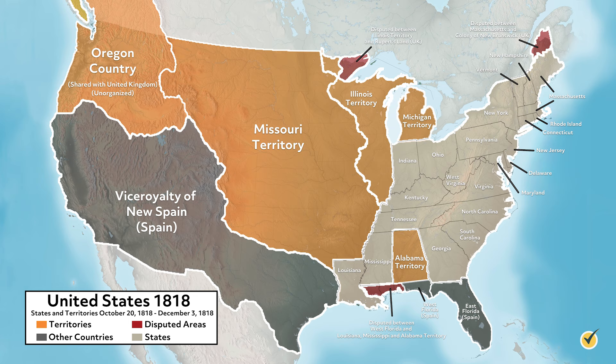Though the slave market had received a check internationally, domestically the demand for slaves on southern plantations increased as a result of the ban, and interstate slave trading became highly lucrative. This development, along with a process of slavery abolition in northern states that had begun shortly after the American Revolution, and the banning of slavery in the territory that comprised Ohio, Indiana, Michigan, and Illinois, meant that by the early 1800s, American slaveholding states were mainly in the southern part of the country.